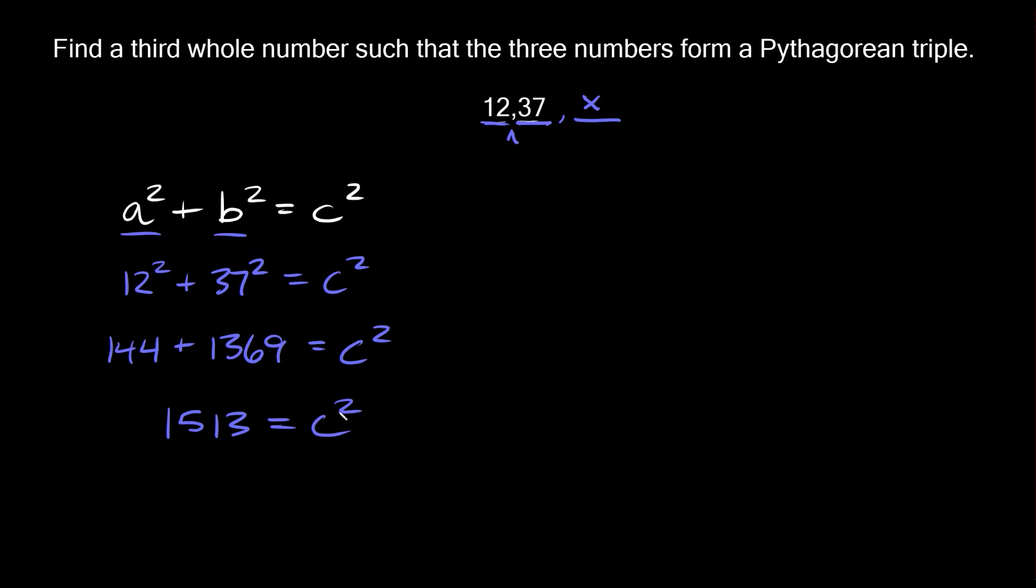To solve for c and get rid of this exponent we just need to take the square root of both sides. The radical and the squared exponent cancel out so we're left with c = √1513 which is approximately 38.9.